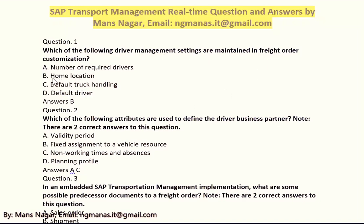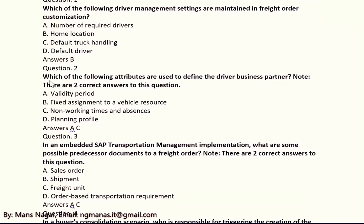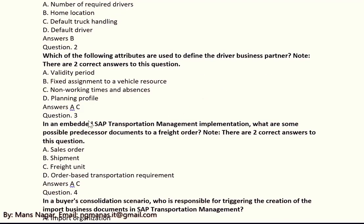The answer is B: home location. Question two: which of the following attributes are used to define the driver business partners? There are two correct answers: A, validity period, and C, non-working time and absences.